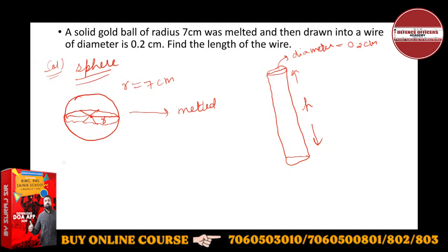They will have the same volume. If I talk about volume of sphere, what is volume of sphere? Volume data, so 4 by 3 pi r cubed. And what is the volume of cylinder? Volume of cylinder is nothing but pi r squared h.